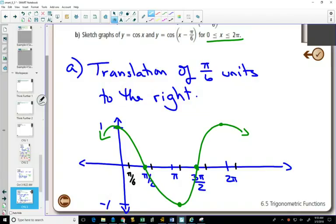So we're going to take each of these key points that we had on our cosine graph, and all we have to do now is shift them π over 6 to the right and draw our new graph going through those.